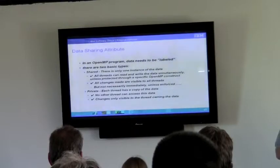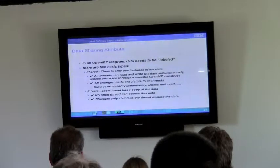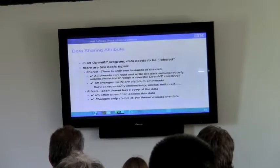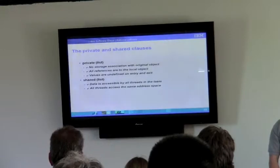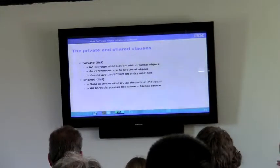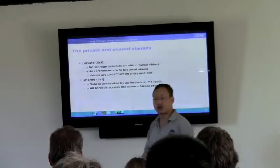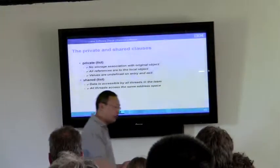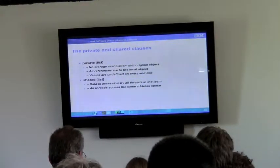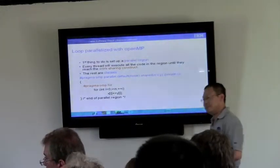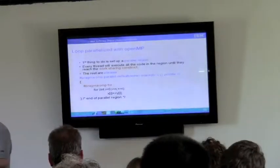In an OpenMP program data needs to be labeled, and there are two basic types: shared and private. There's only one instance of shared data and all threads can read and write simultaneously. With private, each thread has its own copy of the data. You can specify them in a clause using a private clause specifying the entire list of variables. Are the private variables really thread local? Yes, that's where they'll go.